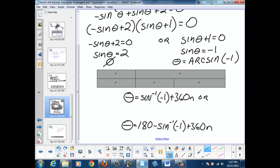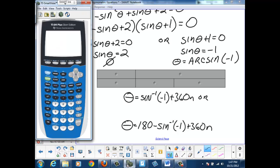The inverse sine of negative 1, let's see what our calculator says. And we get negative 90 degrees.